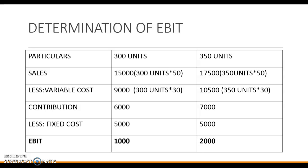We prepare a statement of income to determine EBIT. At 300 units: sales = Rs. 15,000 (300 × 50), less variable cost Rs. 9,000, contribution = Rs. 6,000, less fixed cost Rs. 5,000, giving EBIT = Rs. 1,000. When sales increases to 350 units: sales = Rs. 17,500, less variable cost Rs. 10,500, contribution = Rs. 7,000, fixed cost remains Rs. 5,000, giving EBIT = Rs. 2,000.